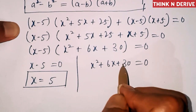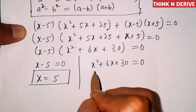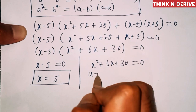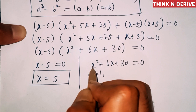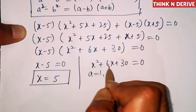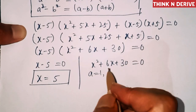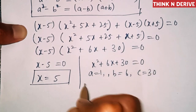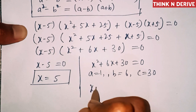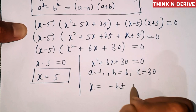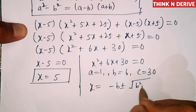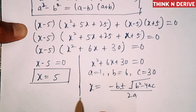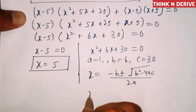We'll find the solution by using the quadratic formula. This is of the form ax² + bx + c = 0, where a = 1, b = 6, and c = 30. So x = (−b ± √(b² − 4ac)) / 2a.